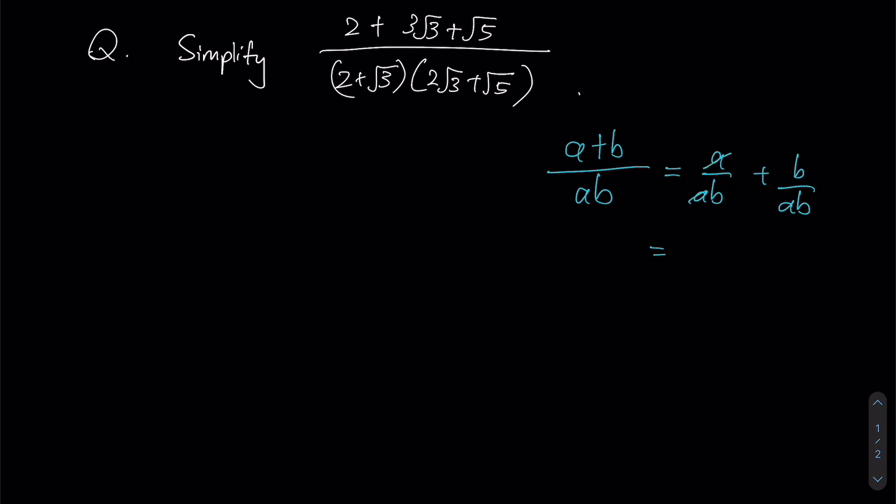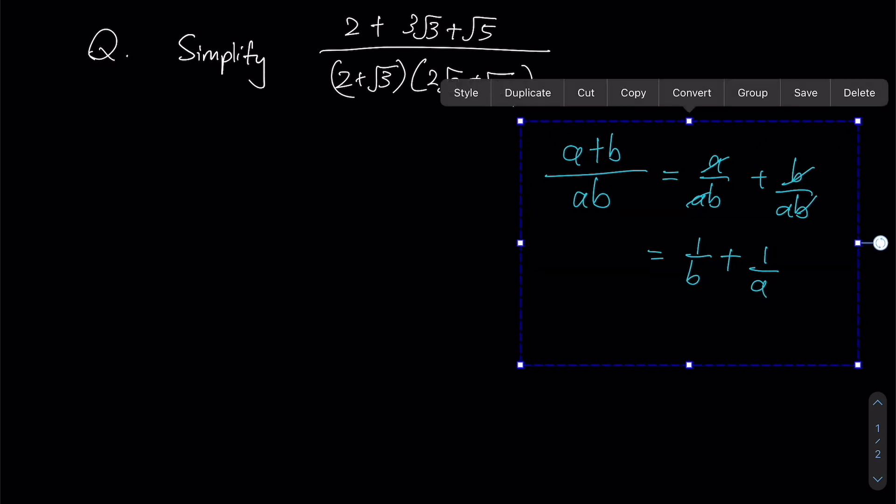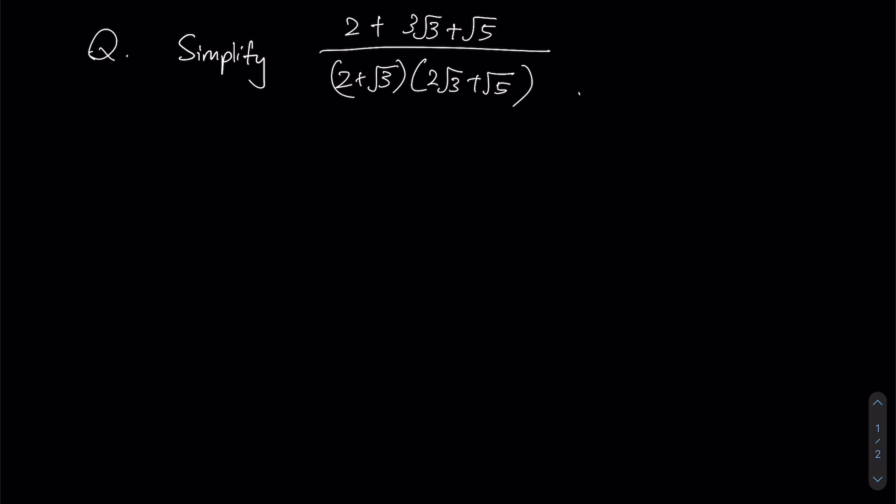All right, and notice that a and a are common here, so I could write it as 1 over b. b and b are common here, so I could write it as 1 over a. All right, so let us try to apply it into this question over here. So therefore, my given expression can now be written as 1 over 2 plus root 3, the other one being 1 over 2 root 3 plus root 5. All right, so now that we have achieved this splitting,